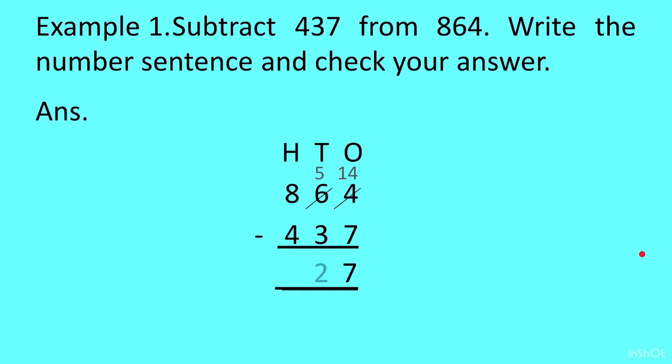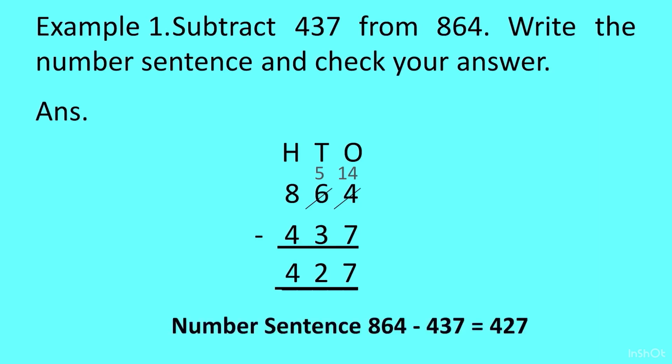In the tens column we have 5 minus 3, which gives us 2. In the hundreds column we have 8 minus 4, which gives us 4. So our answer becomes 427.